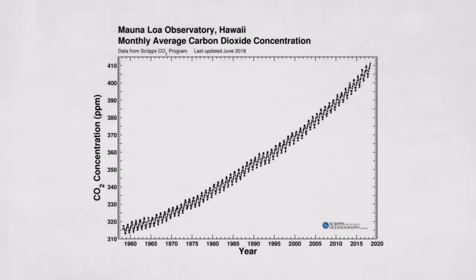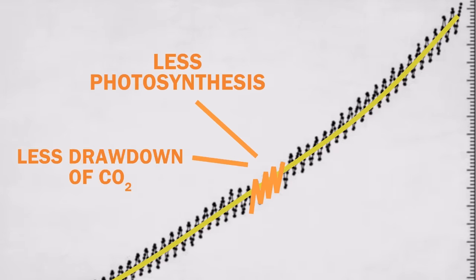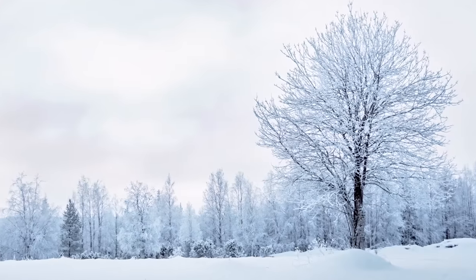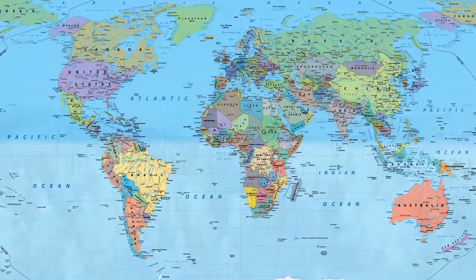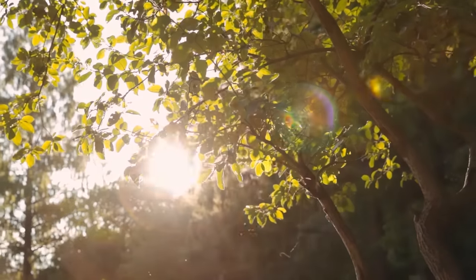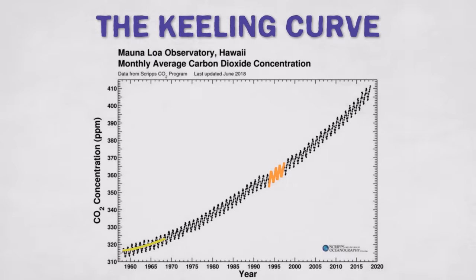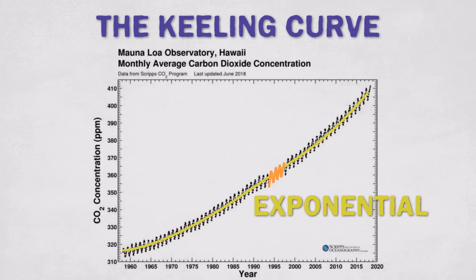This is the Keeling Curve — a daily record of carbon dioxide concentrations at Mauna Loa, Hawaii, since 1958. There are two distinct trends: the small yearly fluctuations and an overall upward trend. Those yearly fluctuations are because of less photosynthesis, and therefore less drawdown of CO2, occurring during Northern Hemisphere winter months. The Northern Hemisphere has more landmass, so the seasonal cycle of trees and grasses impacts global CO2 concentrations. During Northern Hemisphere summer, when all the plants wake up, photosynthesis rates go up and plants draw down CO2 out of the air. The yearly cycle is natural, but it's that upward trend that's worth worrying about — the increase in CO2 concentration is exponential, with the rate of increase growing every year.